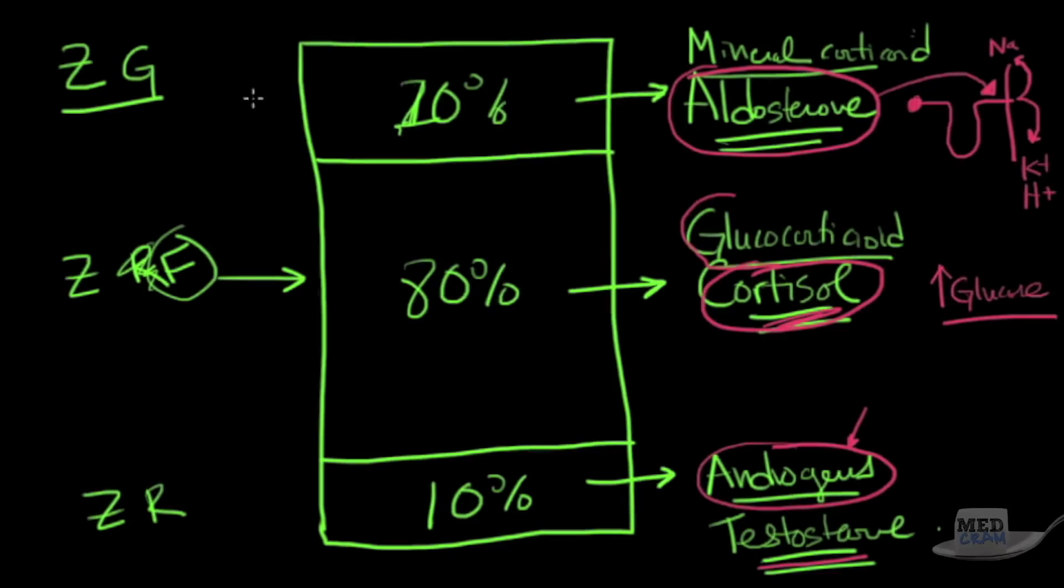What's telling this organ to do all of this? The major one is what's stimulating the zona glomerulosa to make aldosterone? It's potassium, high potassium. So high potassium tells the zona glomerulosa to make aldosterone. What's stimulating this? A substance called ACTH.